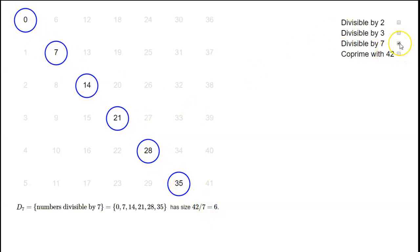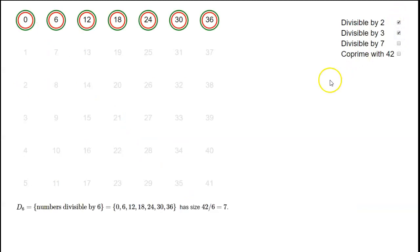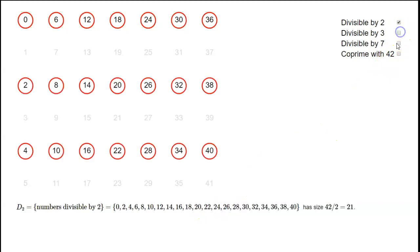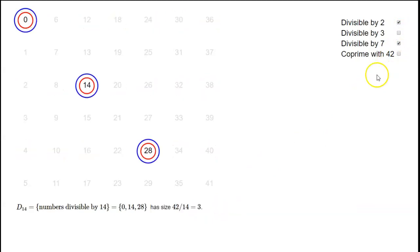For the inclusion-exclusion principle, we don't just need the sizes of D2, D3, and D7, but also the sizes of their intersections. D2 intersect D3 are numbers divisible by both 2 and 3, which is the same as being divisible by 6. Every sixth number is divisible by 6, so the size of D6 is 42 over 6, which is 7. Similarly, D2 intersect D7 are numbers divisible by 14, so the size of D14 is 42 over 14, which is 3.